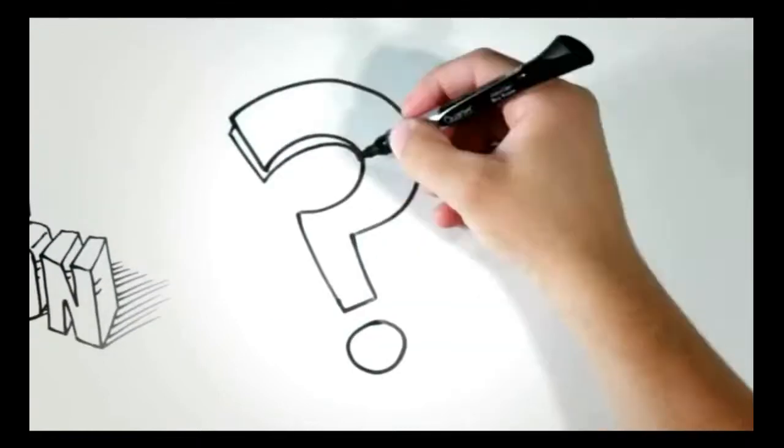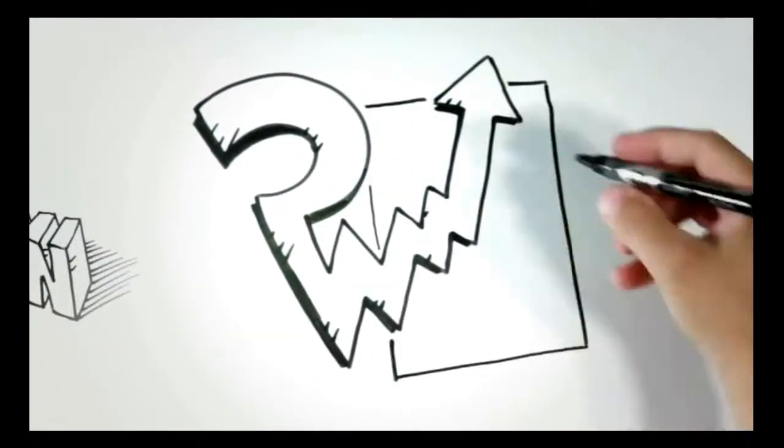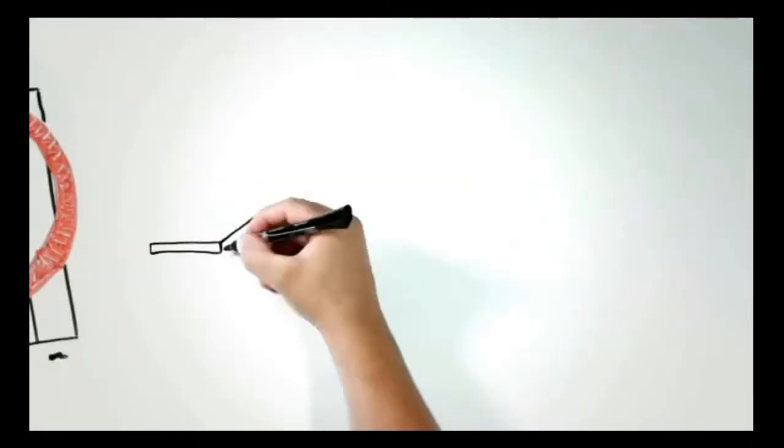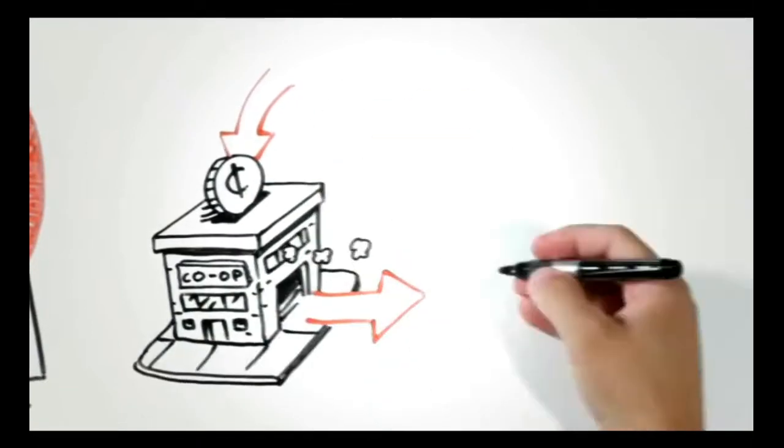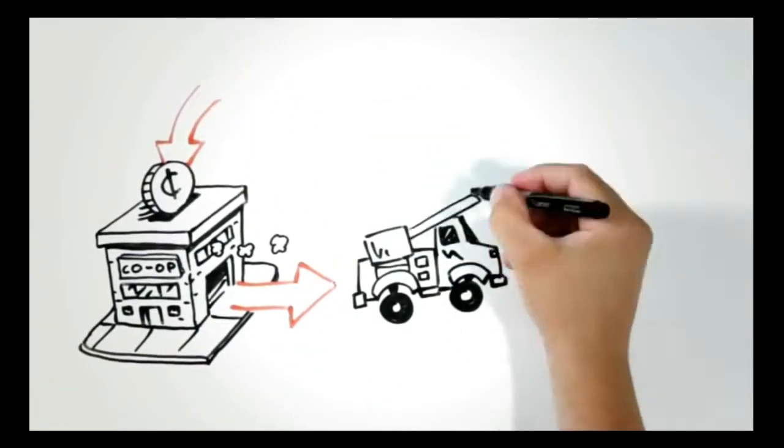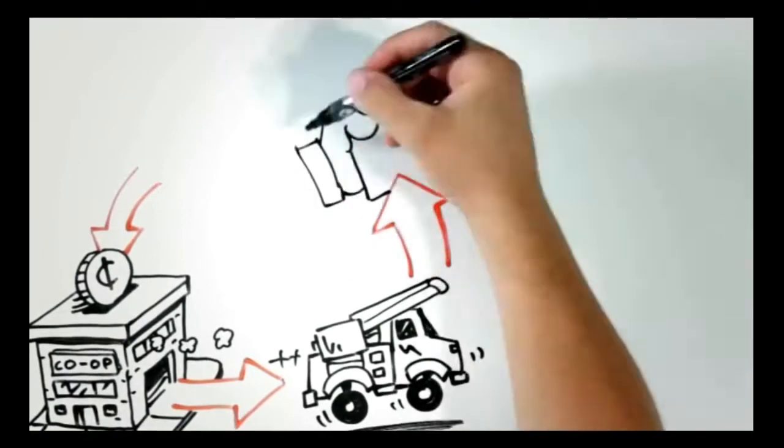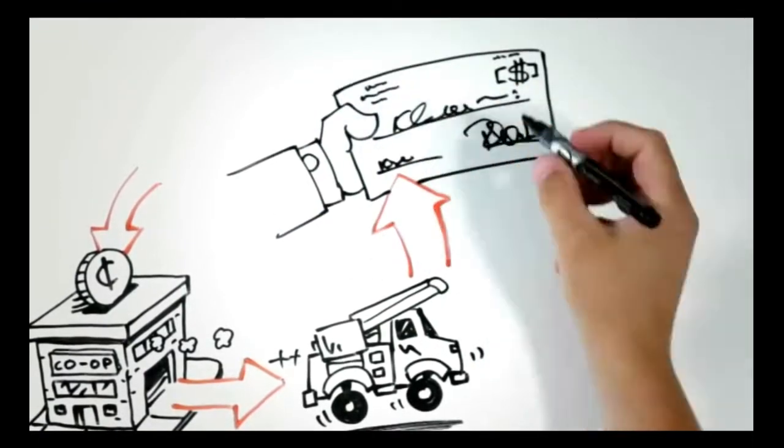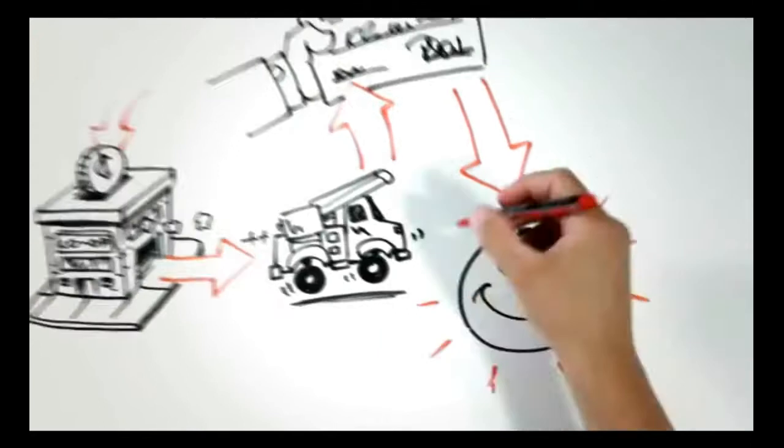So how do cooperatives work? First off, cooperatives are not-for-profit. Money comes in from members when they pay their electric bills. Money goes out to pay co-op expenses. A little bit is set aside for emergencies and the future. Any leftover is returned to members. Pretty sweet, huh?